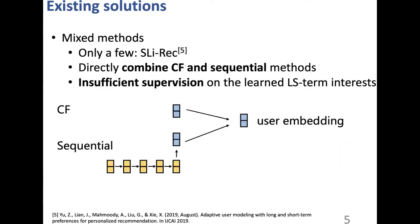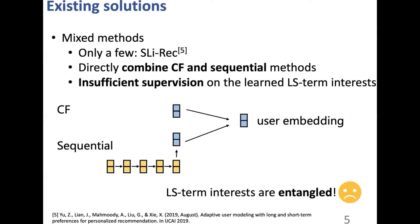Only a few methods consider both aspects — the mixed methods. However, they propose to directly combine collaborative filtering and sequential methods, and impose insufficient supervision on the learned long- and short-term interest. This means that the learned representations for one aspect contain much information about the other aspect. In other words, the long- and short-term interests are entangled with each other.